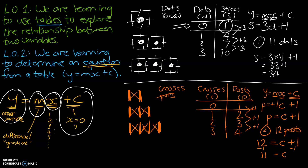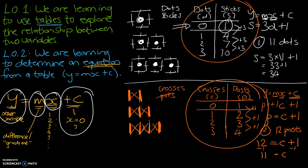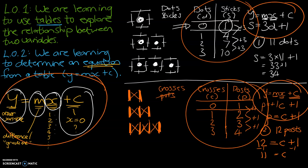Hopefully you found this video useful. Just to recap our learning objectives — we had two today. We were learning to explore the relationship between two variables through the use of tables. And our second learning objective, we were learning to determine the equation from a table. From those tables, we used our y equals mx plus c equations to calculate or determine an equation that represents the pattern we are observing.